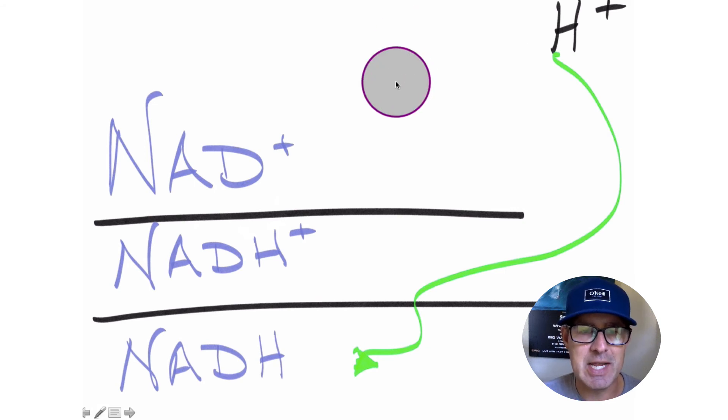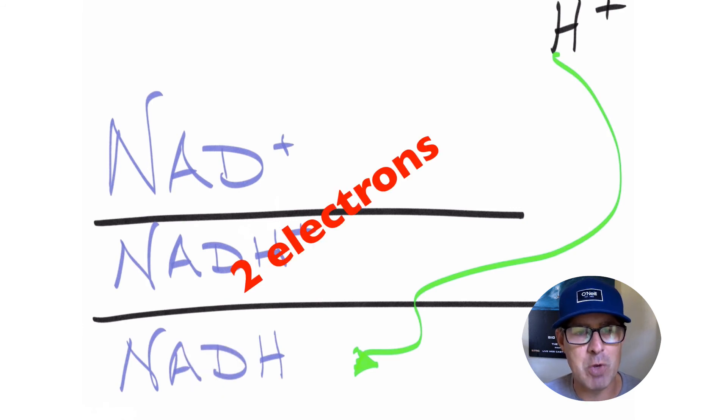Keep in mind, this molecule, NADH, is shuttling two electrons that it just grabbed—one electron from each of the hydrogen atoms—and it's also shuttling a proton or hydrogen ion.